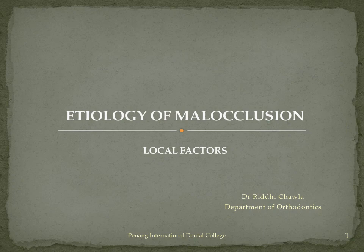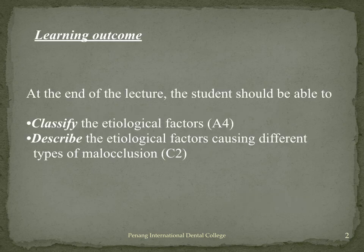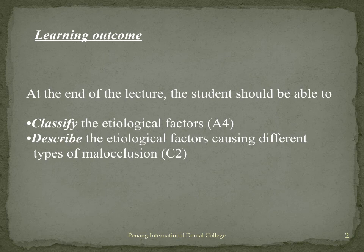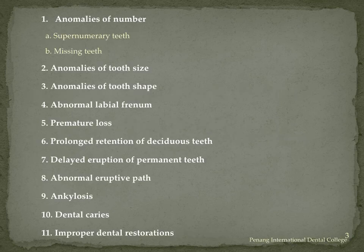Good morning everybody. Today's lecture is on etiology of malocclusion — local factors, those factors which are locally going to affect and lead to a malocclusion. This is in continuation with Graeber's classification, where we have already covered the general factors in the previous lecture. By the end of this lecture, you will be able to classify the etiological factors and also describe each one of them in detail.